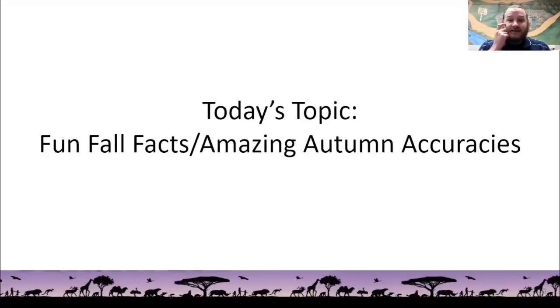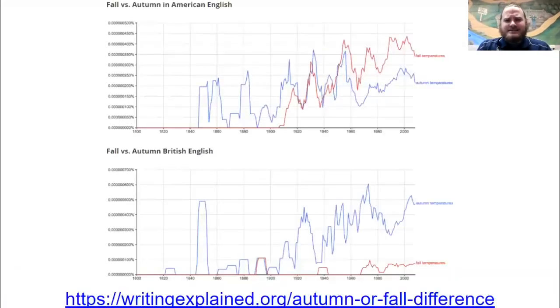But let's go back to today's topic. Today's topic is Fun Fall Facts or Amazing Autumn Accuracies. Now, why two titles? Well, it's because this season is the season so nice, they named it twice. That's right. Fall and Autumn are both terms that refer to the same season.